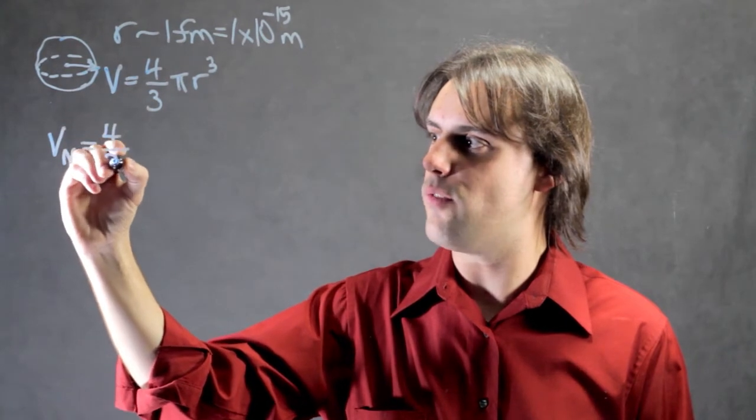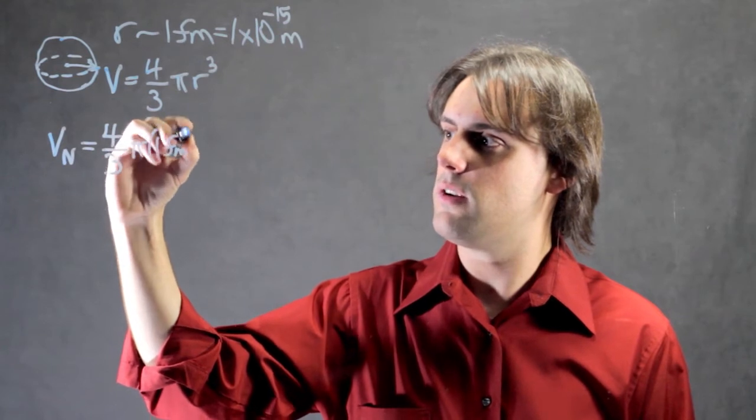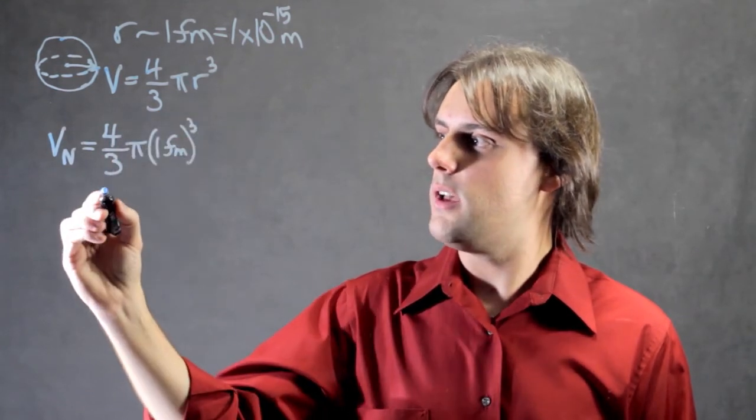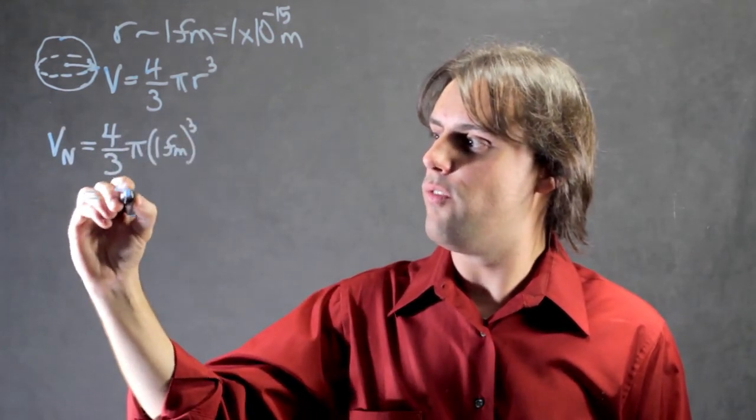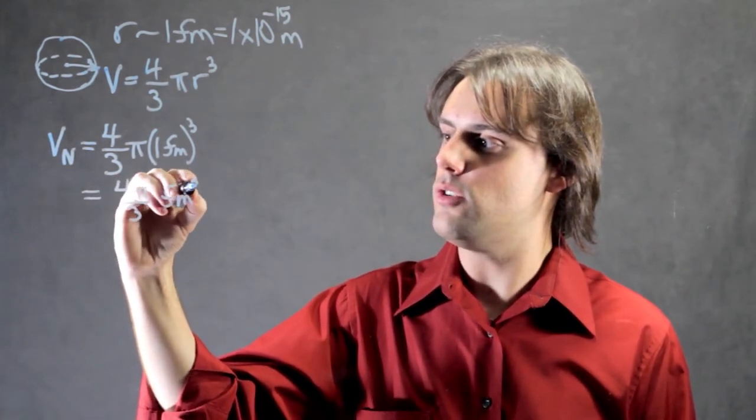We would simply have 4/3 pi times one femtometer cubed. And this yields 4 pi divided by 3 in units of femtometers cubed.